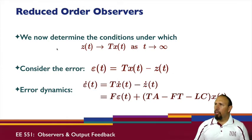We need to determine the conditions under which Z converges to T times X of T. Remember, this is an estimate; it's not actually T times X of T. We consider the error: TX minus Z. We differentiate to get the error dynamics: TX dot minus Z dot. Notice we have F times the error and then we have this other thing that's a function of the state. Instead of just having E dot equal to something times E, we have all of this other stuff too.